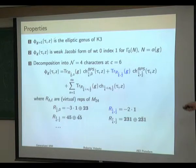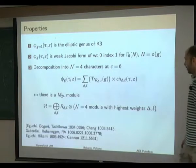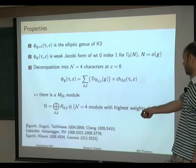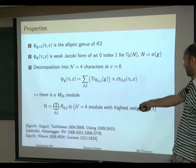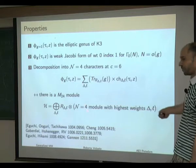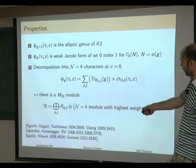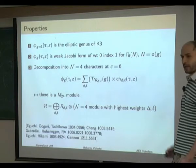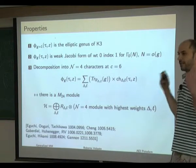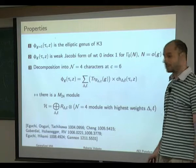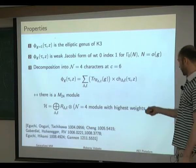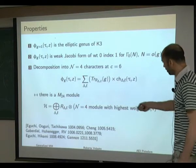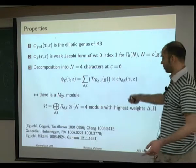We can rephrase this by saying there must be some vector space which is a direct sum of tensor products between M24 representations and N=4 modules. The twining genera are the characters of this vector space. The special property is that these characters are modular, which is non-trivial because characters of the N=4 superconformal algebra alone are not modular — they must combine in a very specific way to give rise to Jacobi forms.